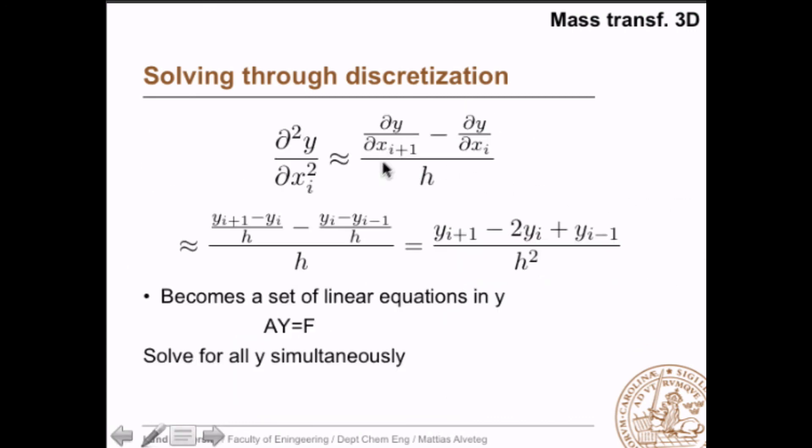So we can do that like this: that the second order derivative, well that's essentially the first order derivative in one point as compared to the first order derivative in another point divided by the distance between those points. And you can repeat that. You take this derivative here is the difference between the y value, the function value in this point as compared to the next point divided by the distance. And the same with this one here. And you shuffle around and you end up with this equation here.